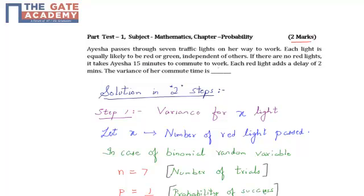My probability of success P would be 1/2, since we are given that probability of red equals probability of green, and both are independent of each other. It is equally likely, hence P equals 1/2.